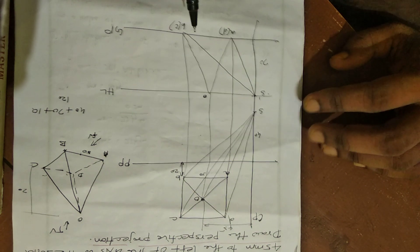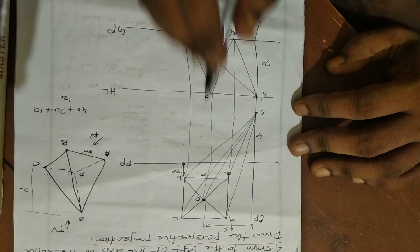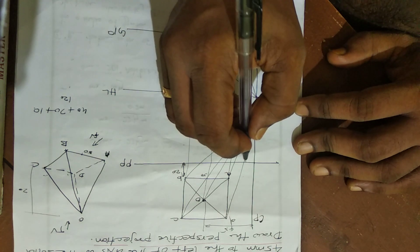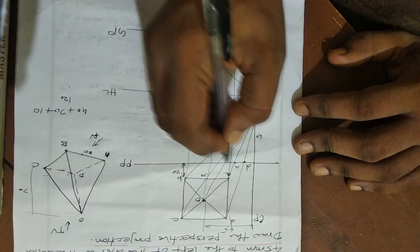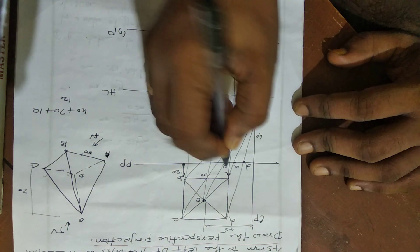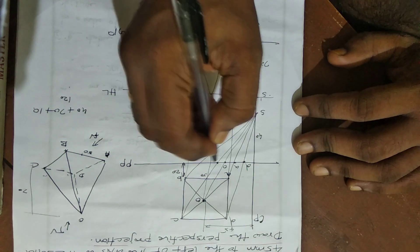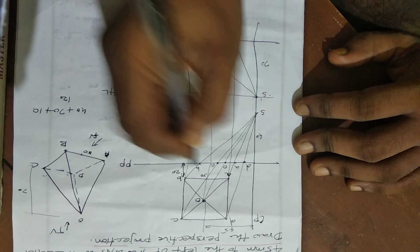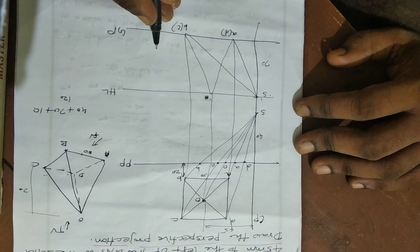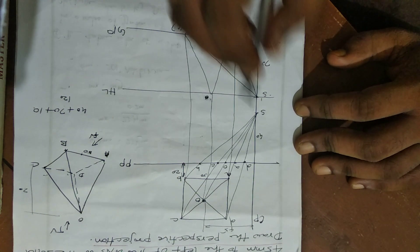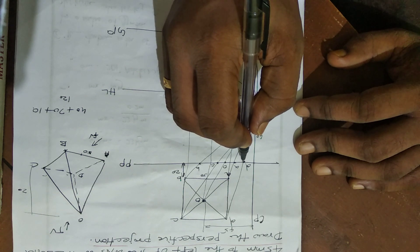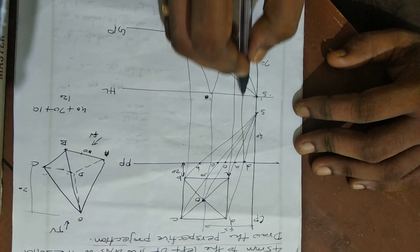We are going to project all points in the same way. Points D, A, O, C, and B are each projected downward from the top view to find their corresponding positions.